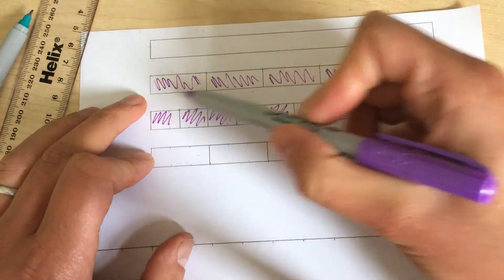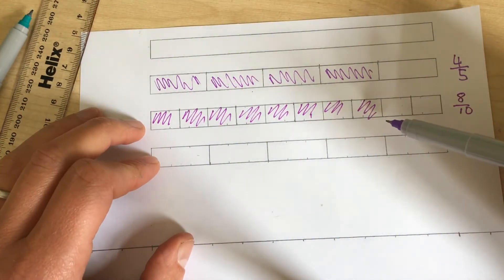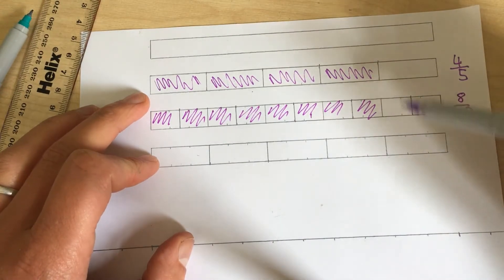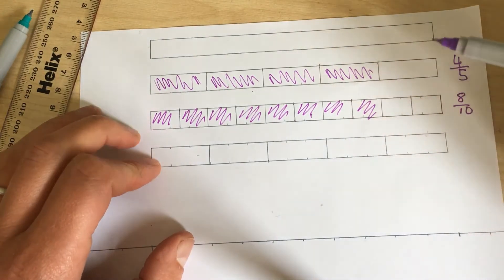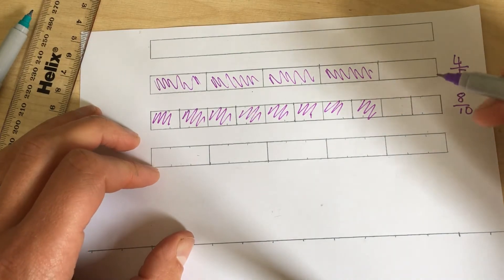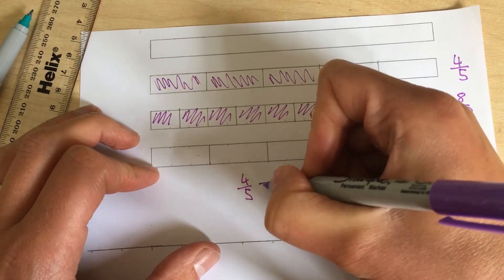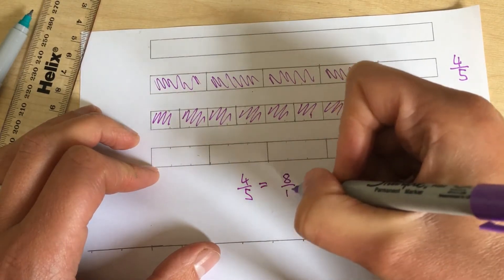Can you see that they are the same length? They are the same part of the whole. So four fifths has the same value as eight tenths. Four fifths equals eight tenths.